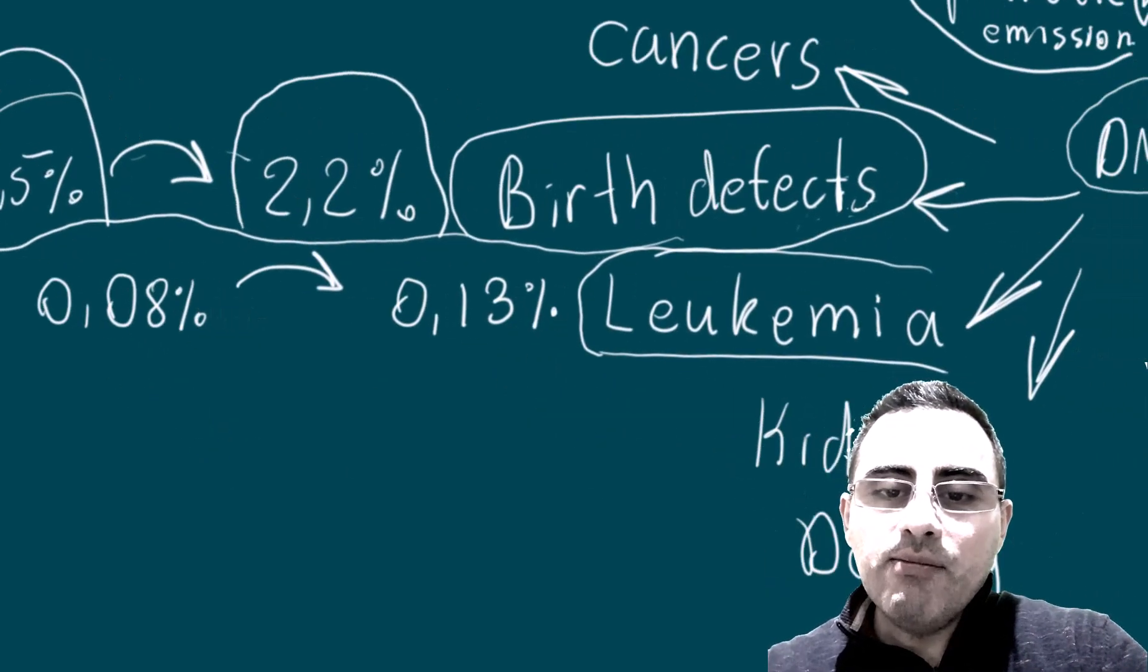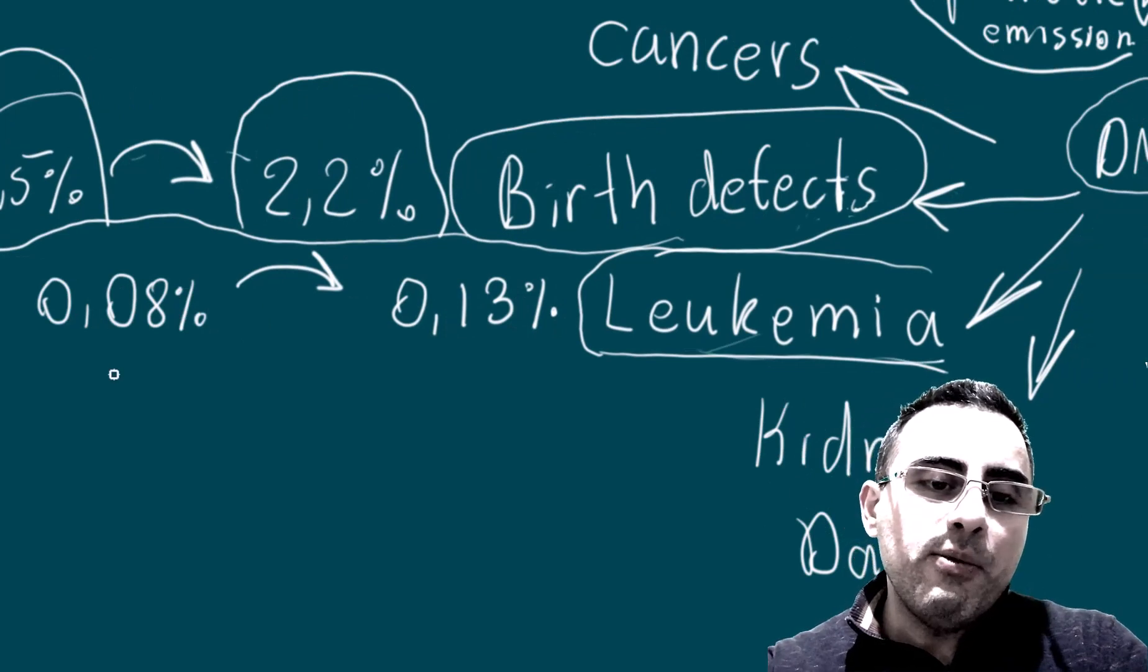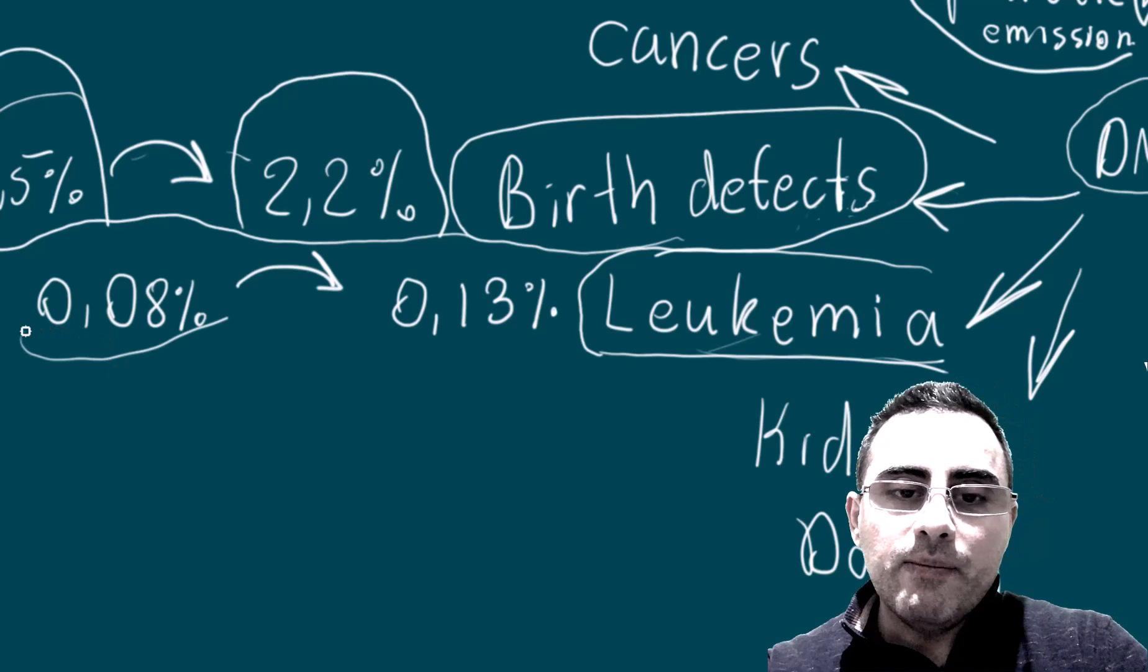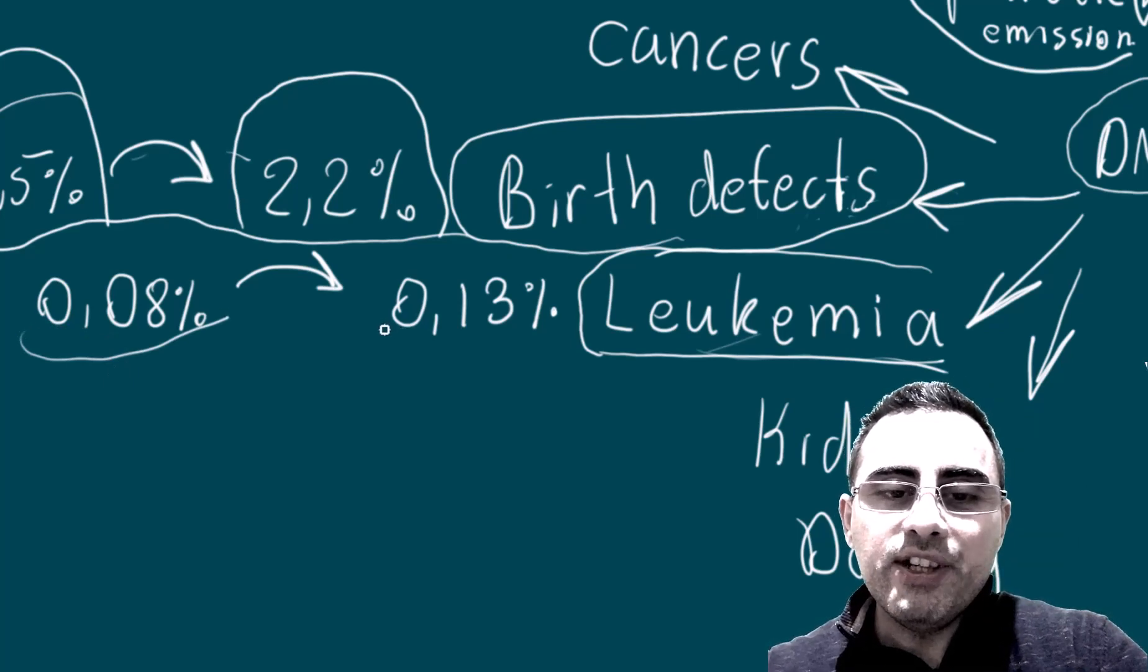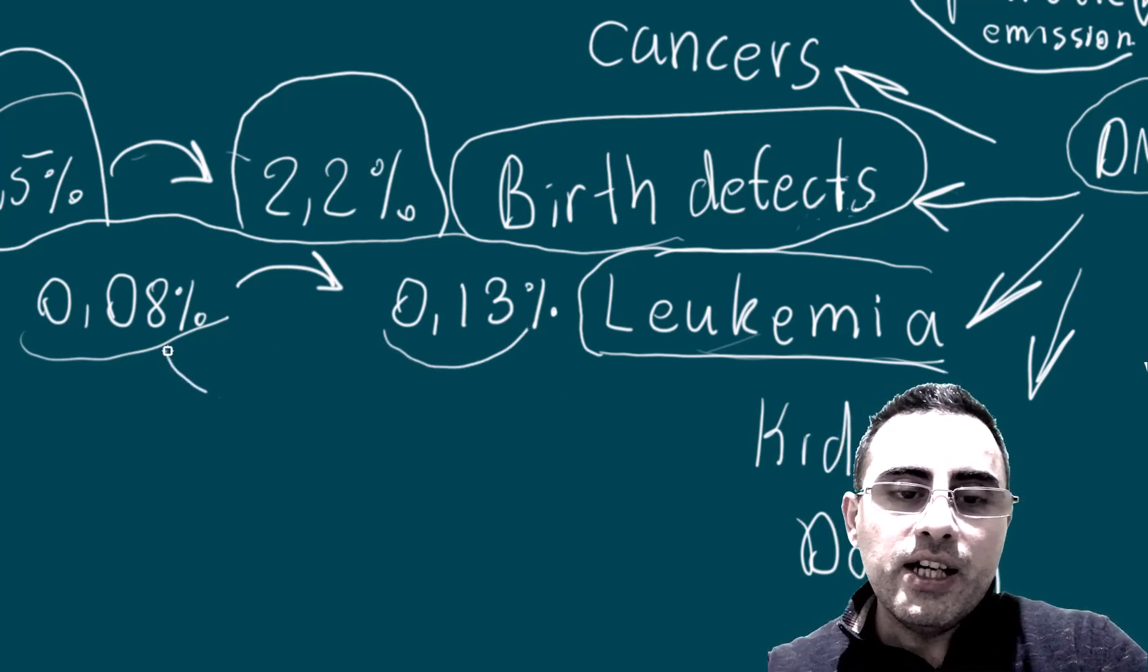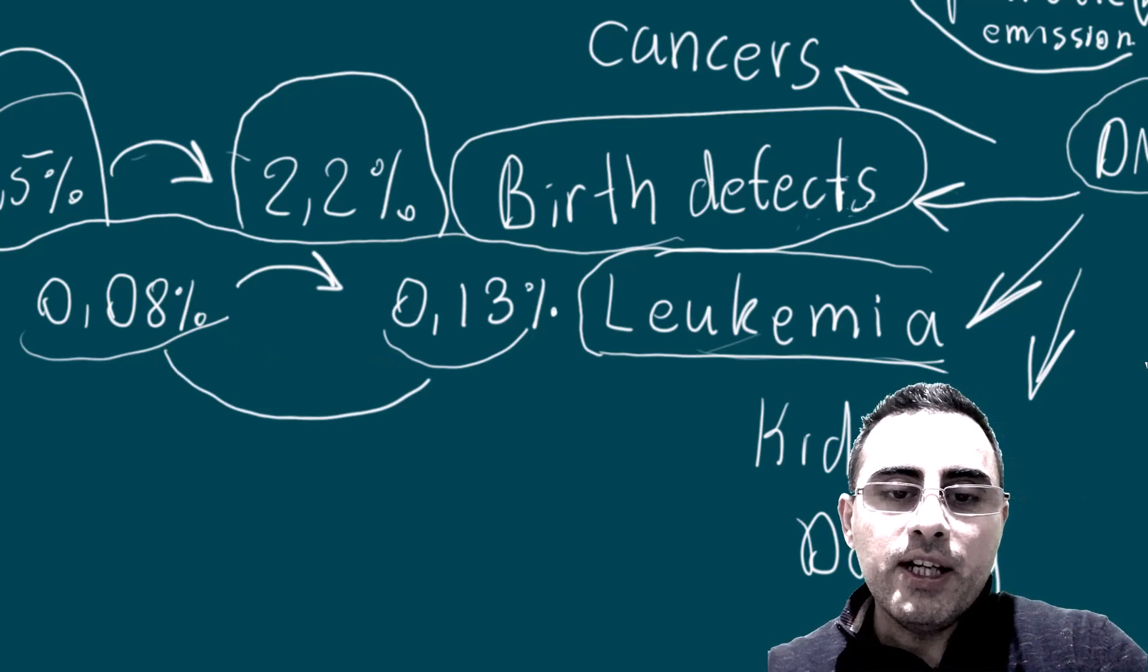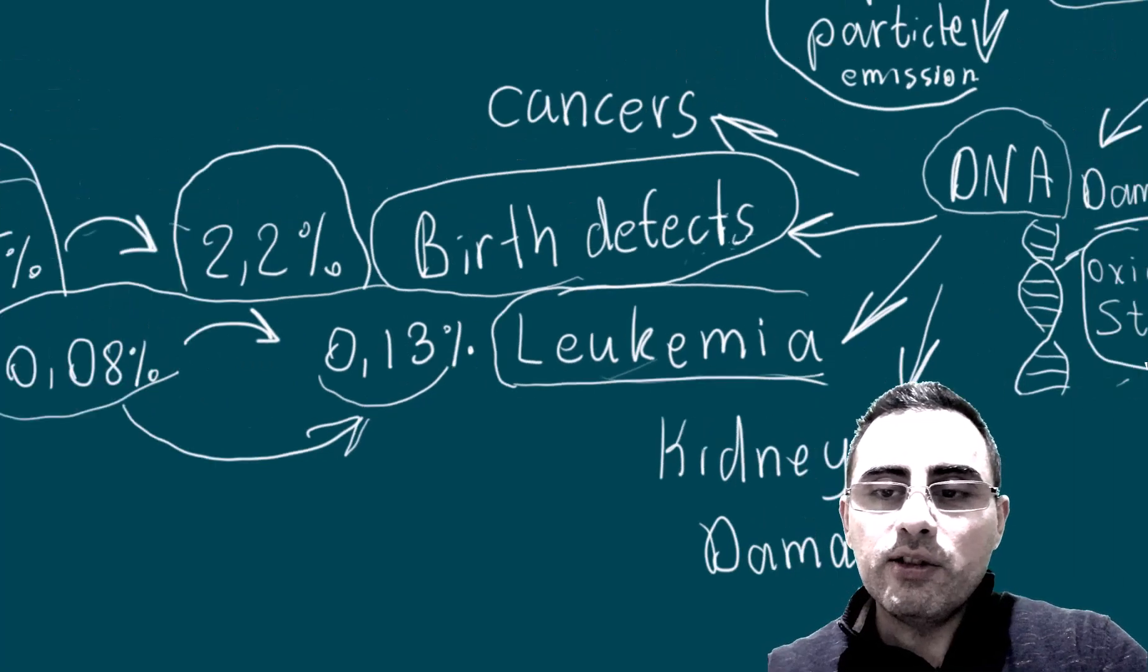And same is in case of leukemia. Leukemia risk is 0.08 percent, and this risk is increased to 0.13 percent. So this change number, of course, is important, but absolute risk is not too high.